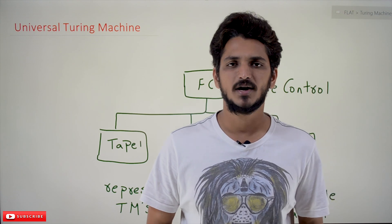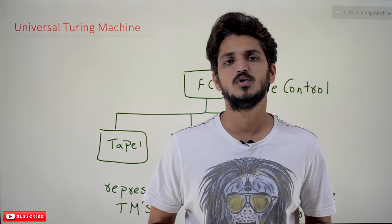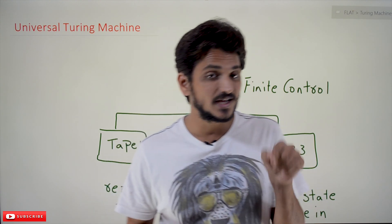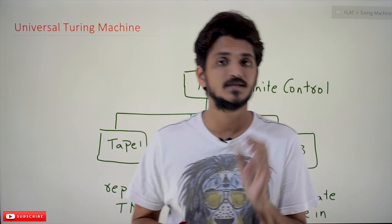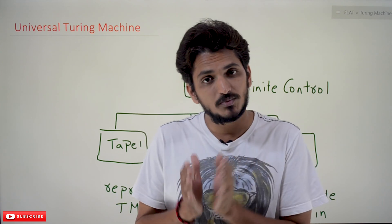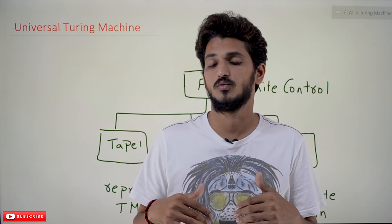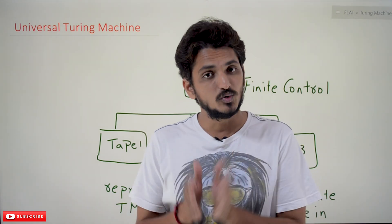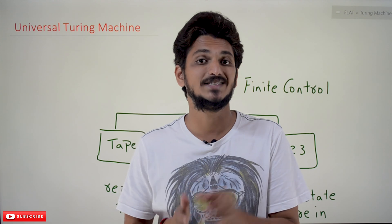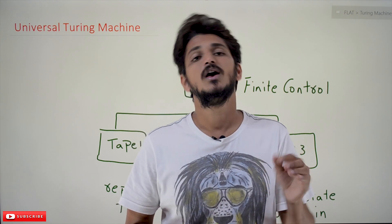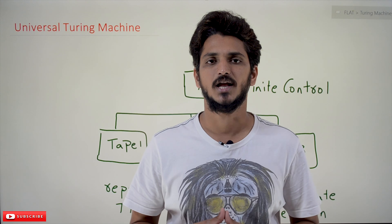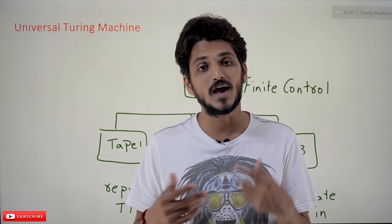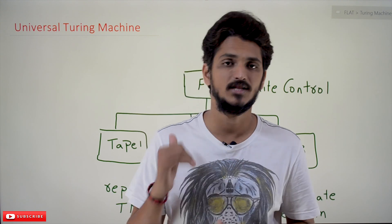Hi, welcome to Learning Monkey. I am Raghunir. In this class, we will discuss about Universal Turing Machine. In our last classes, in the beginning of the Turing machine, we clearly discussed that this Turing machine works as today's computer. So whatever computations that are capable of doing using today's computers, we can do the same using Turing machine. This is the statement we have given in our first class. So is it correct? Yes, it is correct. Why it is correct and how it is correct, let's try to understand in this class.